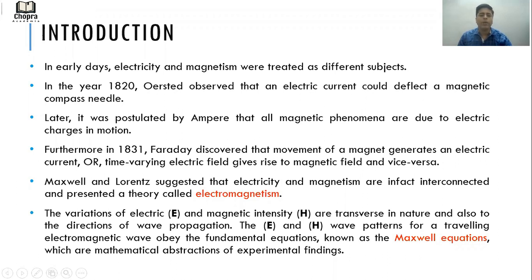Later it was postulated by Ampere that all magnetic phenomena are due to electric charges in motion. Furthermore, in 1831, Faraday discovered that movement of a magnet generates an electric current or time varying electric field gives rise to magnetic field and vice versa.